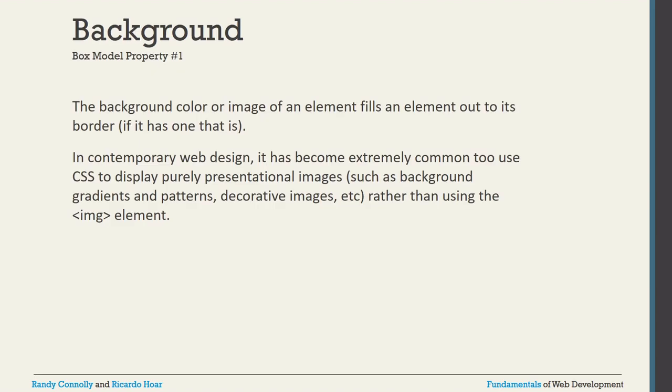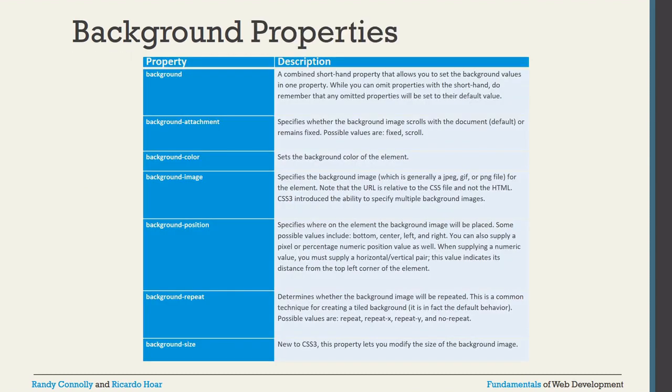First, let's look at background color and background image — how you can fill inside the box. The background property is a combined shorthand property that allows you to set background values in one declaration. Omitted properties will be set to their default values. Under background, the most important sub-properties are background-image, background-color, and background-repeat. With background-repeat, you can set 'no-repeat' or repeat along the x or y axis.